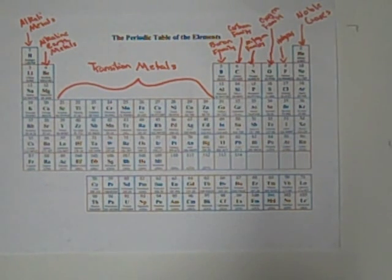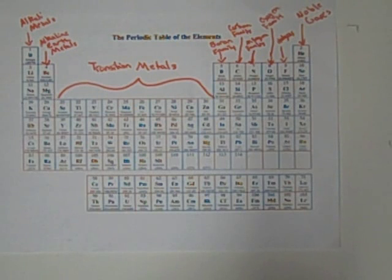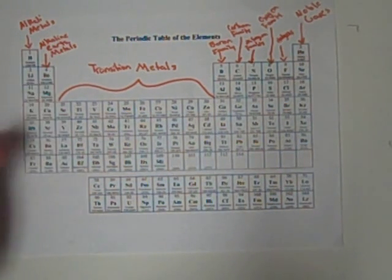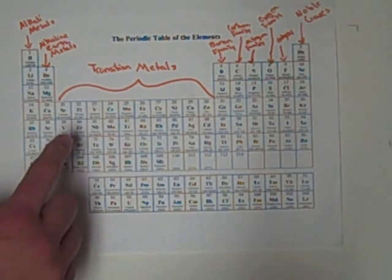These groups can be broken down even further. There are three different types of metals. Alkaline metals are found in the first group. In the second group, you will find your alkaline earth metals. Groups three through twelve contain all the transition metals.